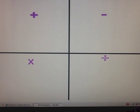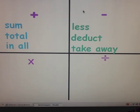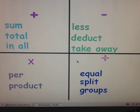We can make equations and expressions from words or word problems. But first, we need to know what operations we use. For addition, some words that mean to add would be sum, total, and in all. For subtraction: less, deduct, take away. For multiplication: per and product. And for division: equal, split, groups.